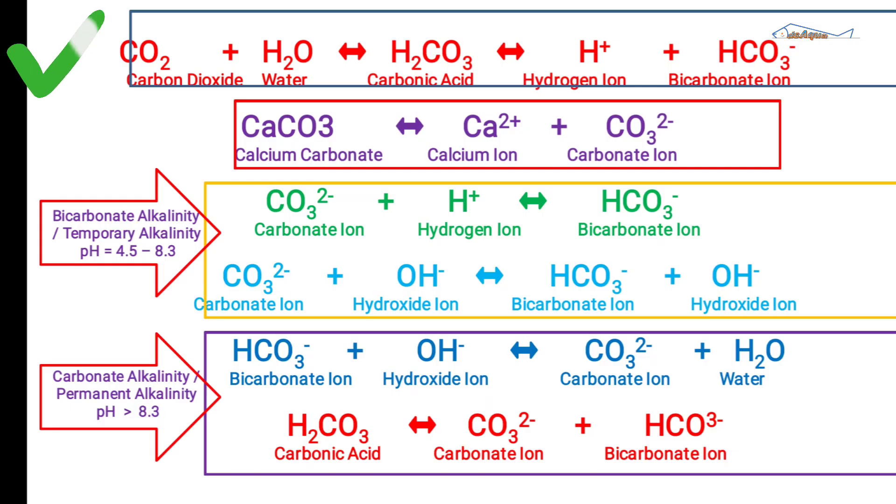This H2CO3 is produced from HCO3, and HCO3 is produced by HCO3. HCO3 is produced by HCO3 as the bicarbonate ion. If the bicarbonate ion is produced, HCO3 is used to increase the calcium carbonate ion.